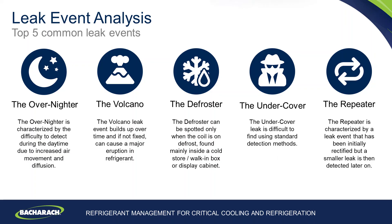So what are the top five common leak events? The overnighter is typically characterised by a difficult-to-detect leak during the day that builds up overnight due to a lack of airflow. The volcano is a leak that starts off small, that can continue for a period of time, and if not fixed early, will erupt into a large refrigerant emission. The defroster is a leak that comes and goes on a predetermined time, spotted only when the coil is on a defrost, usually found inside a walk-in cooler, box, or refrigerated display case. The undercover is a difficult-to-find leak that needs time and dedication by the engineer. The repeater is characterised by a leak event that has been initially rectified, but once rectified, a smaller leak is then detected later on.